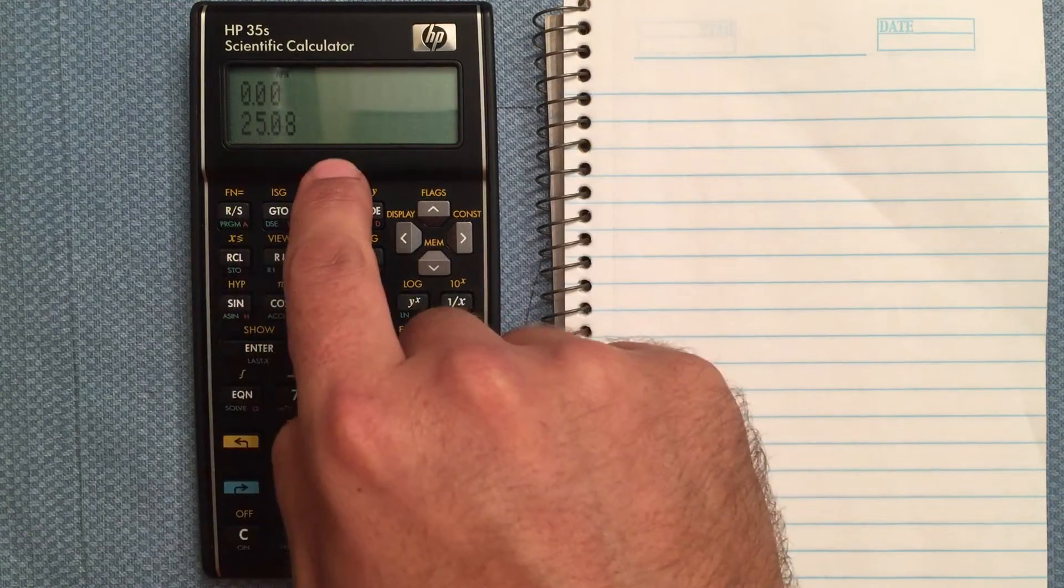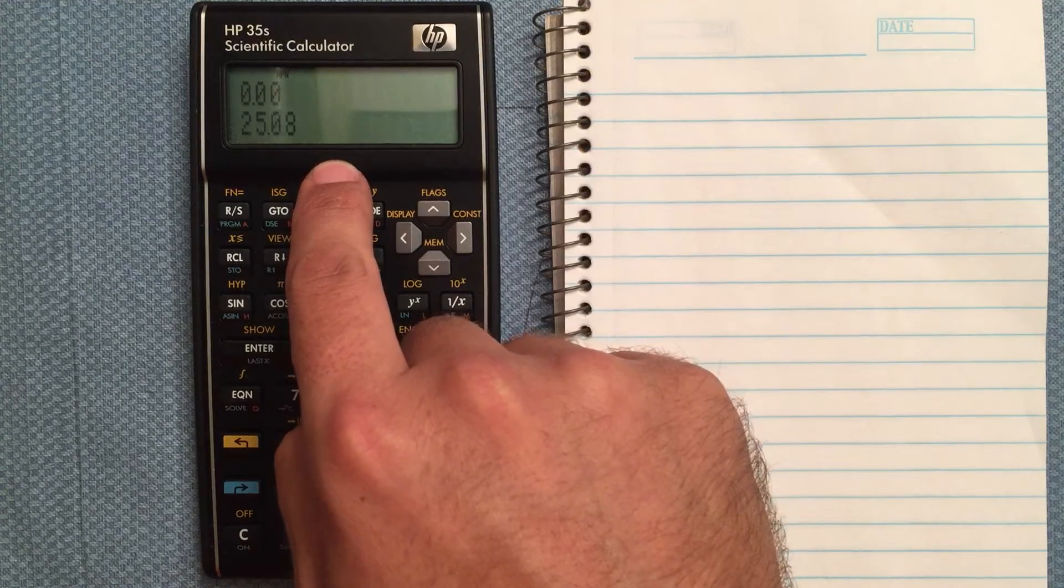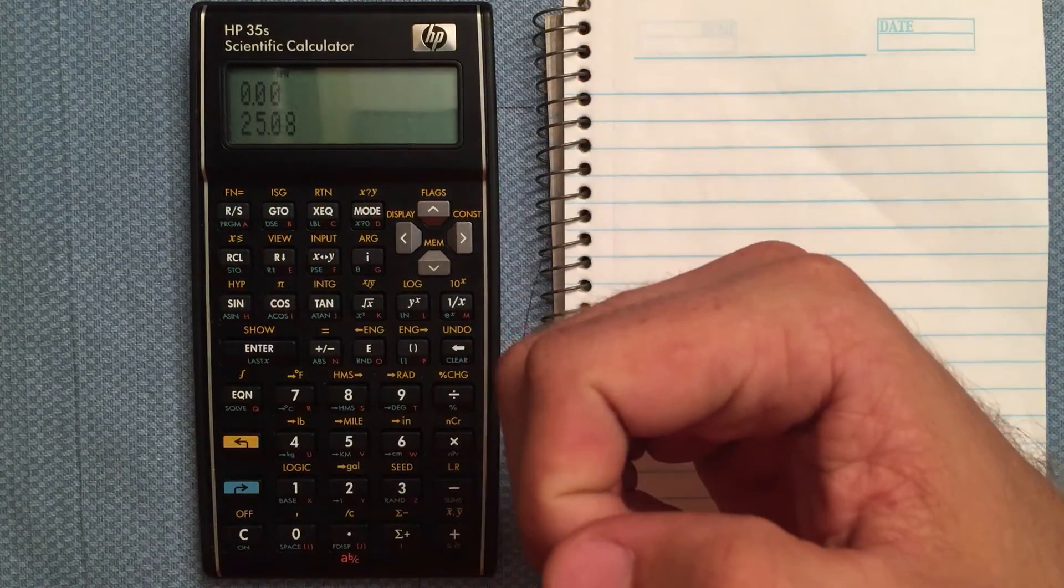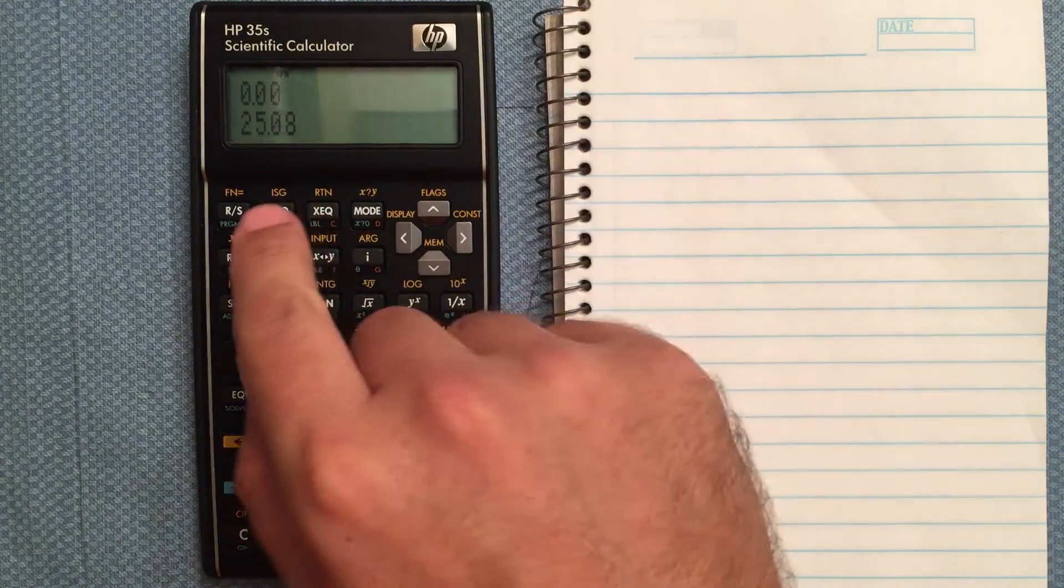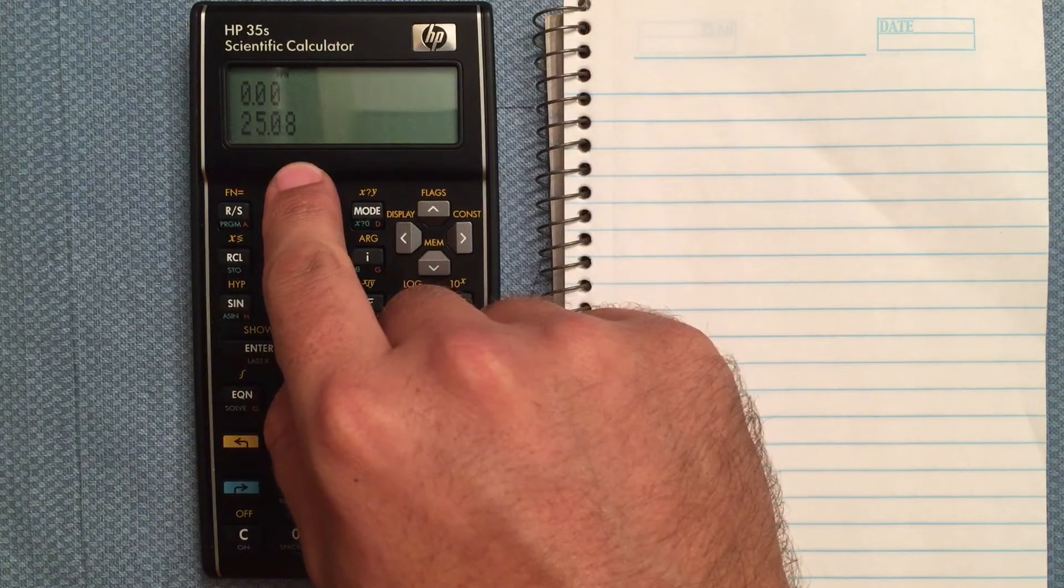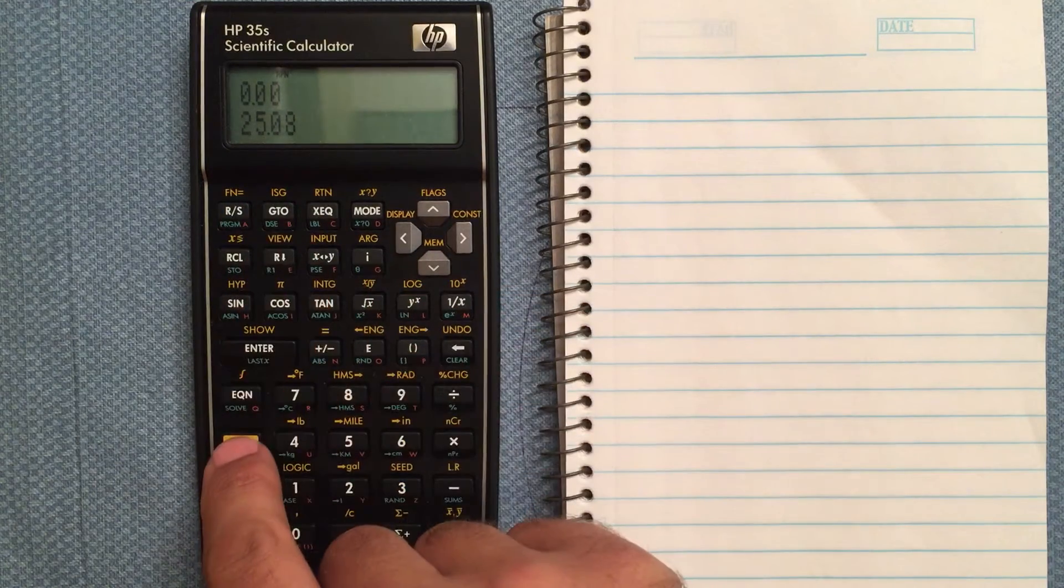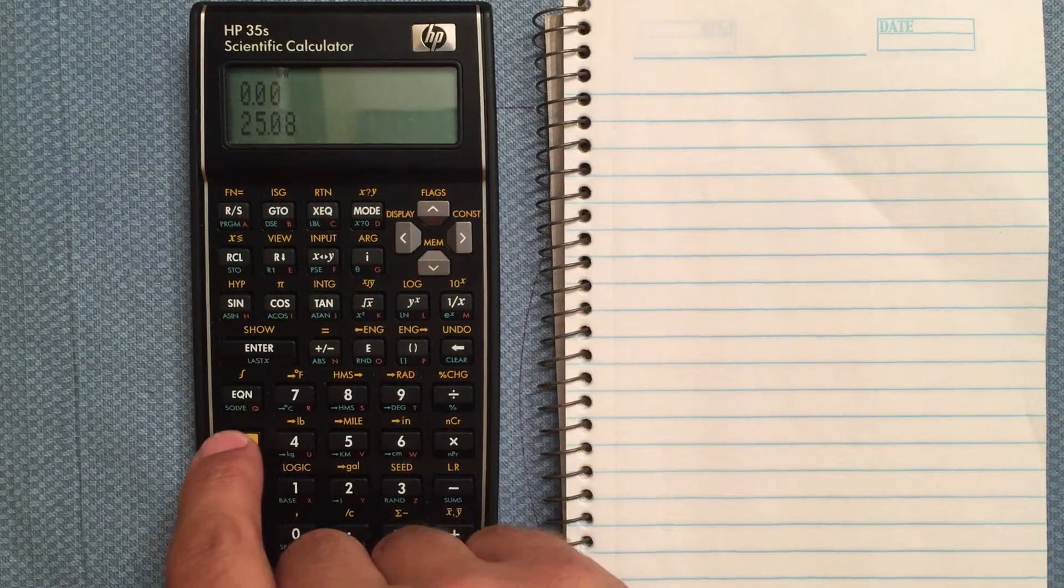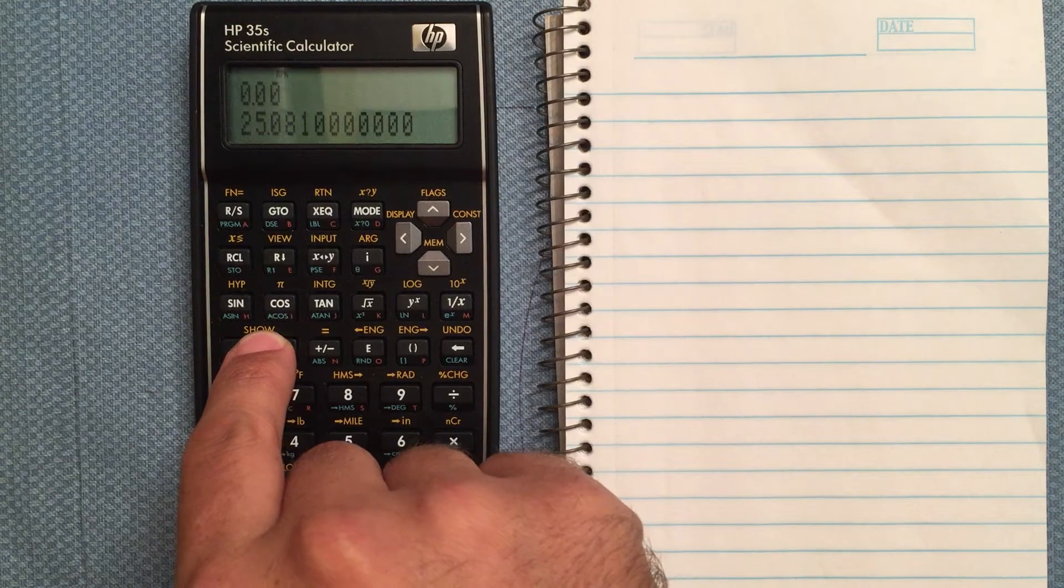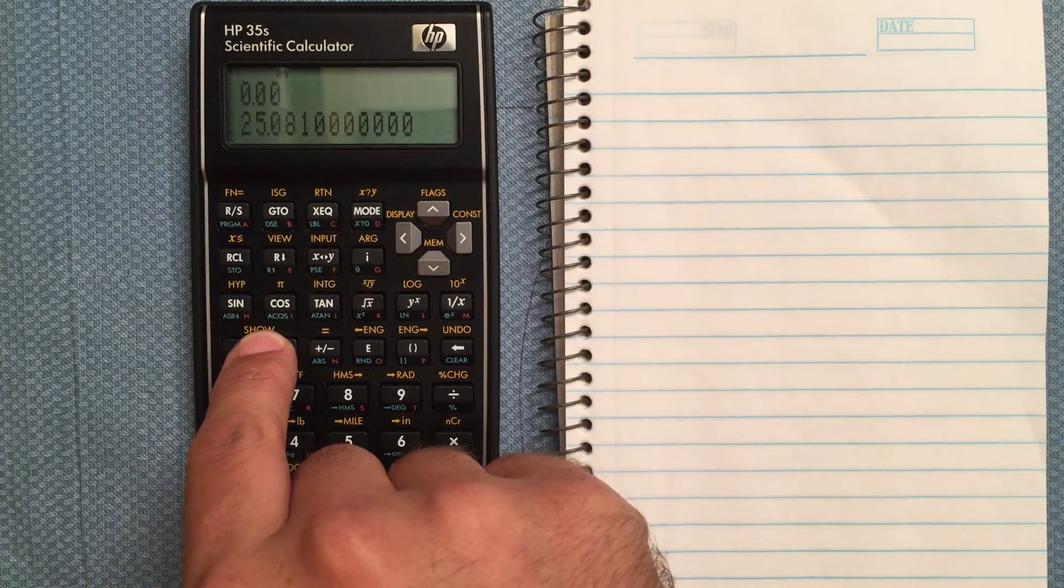If I wanted to see the entire number it has been calculated, because the full precision is stored in the calculator, it just shows out to the number of decimal places that I fixed, I can go to the gold shift key and then show, hold it down, and it will show me the full precision of that number.